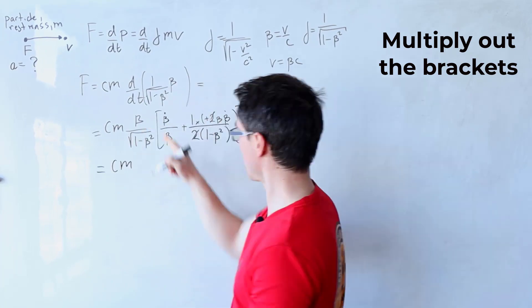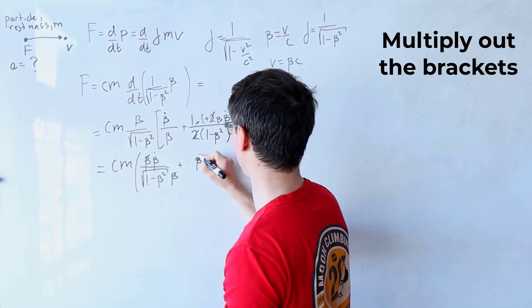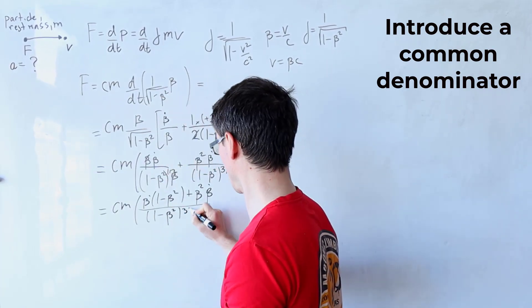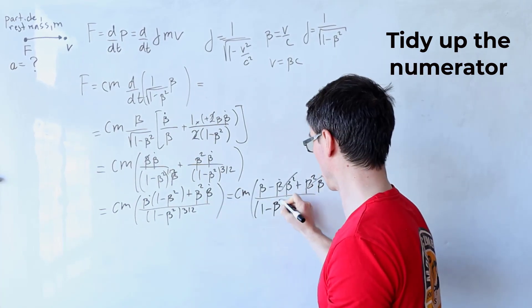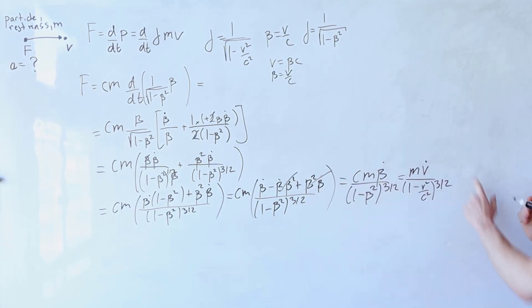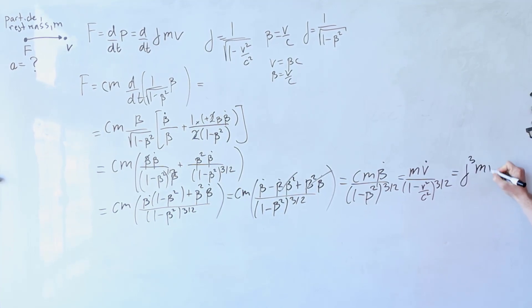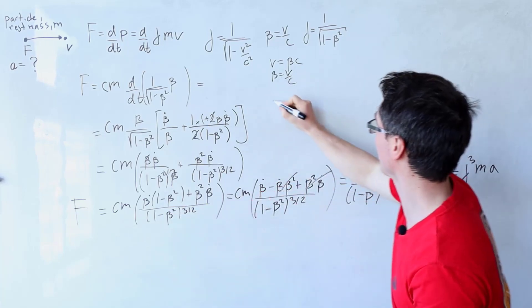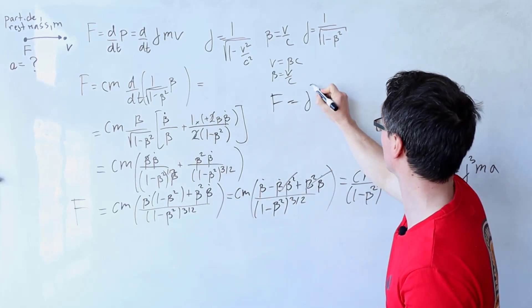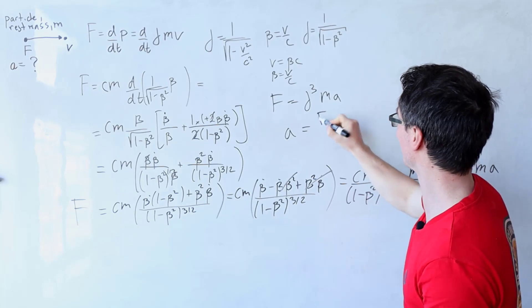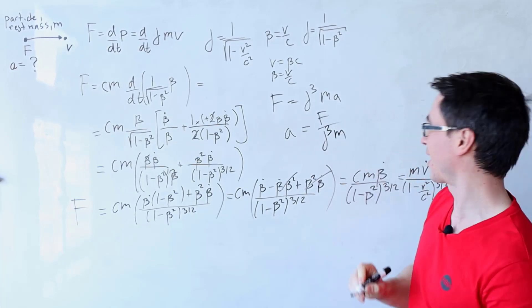Let's tidy this expression up now. So we can rewrite this as gamma cubed m v dot, but v dot is actually just our acceleration. And this whole expression is actually just equal to the force. So we can just write over here that the force is equal to gamma cubed m a, meaning that the acceleration is going to equal to F divided by gamma cubed multiplied by m.